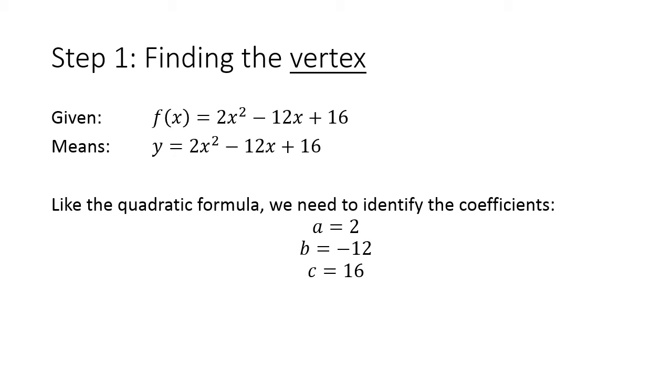So identifying our coefficients, we have a is 2, that's the first coefficient, b is negative 12, that's going to be our coefficient or a number in front of x, and then c, that constant at the end, is 16.